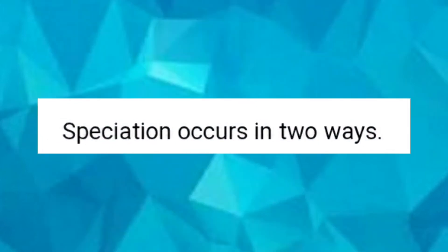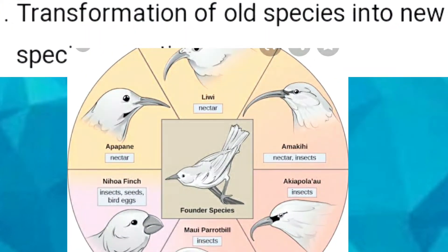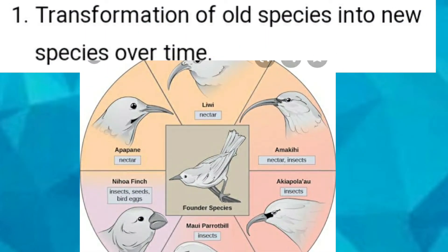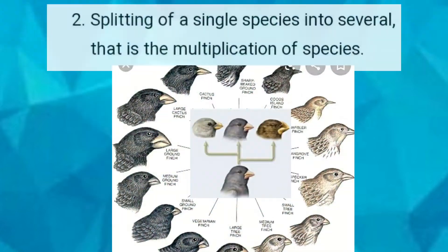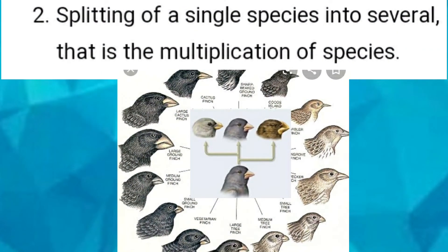Speciation occurs in two ways. The first is transformation of old species into new species over time, and the second is splitting of a single species into several — that is, multiplication of species. These are the two ways speciation occurs.